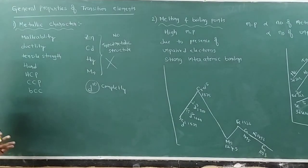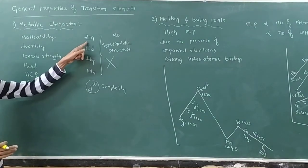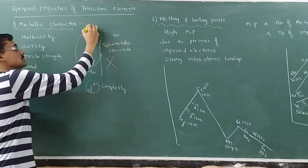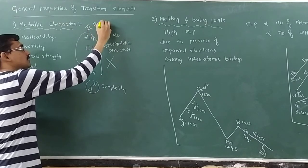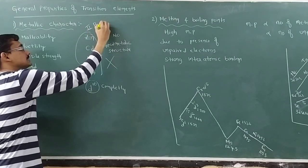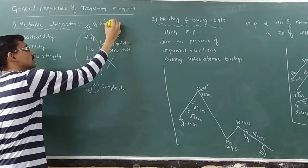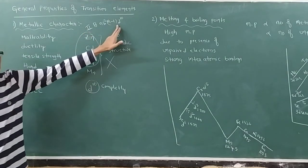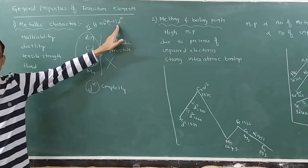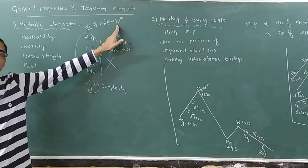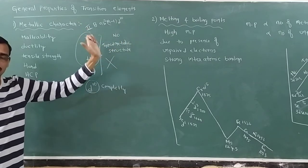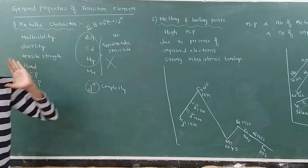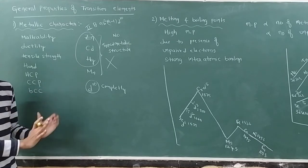In the last class I told you zinc, cadmium, and mercury — these three belong to the second sub-group elements. Their configuration is Ns2, (N-1)d10. There is no unpaired electron, so they are not called transitional elements.